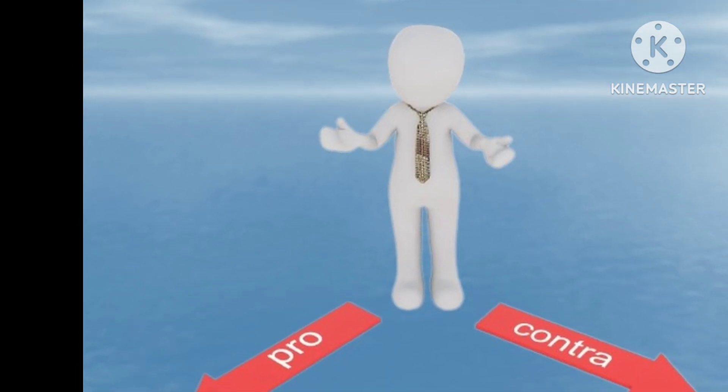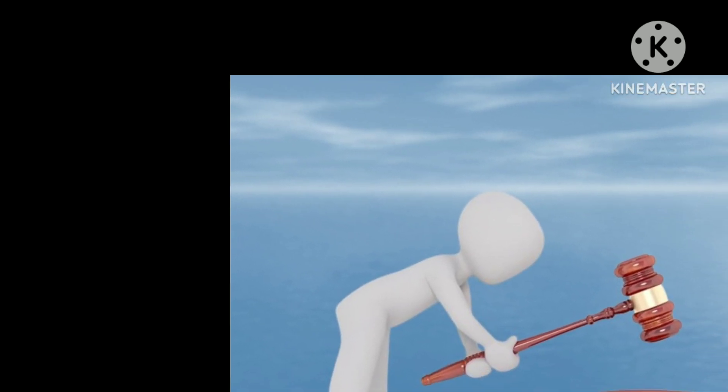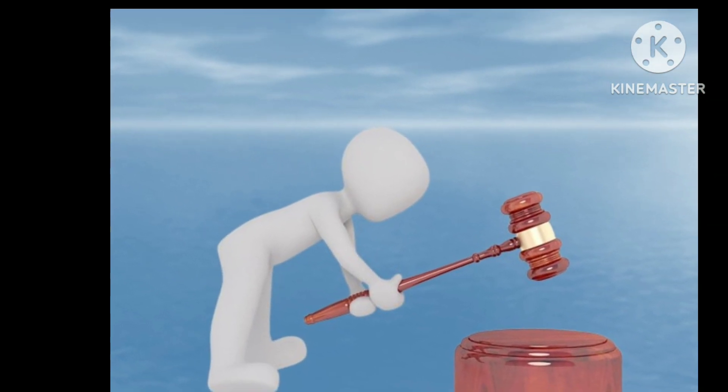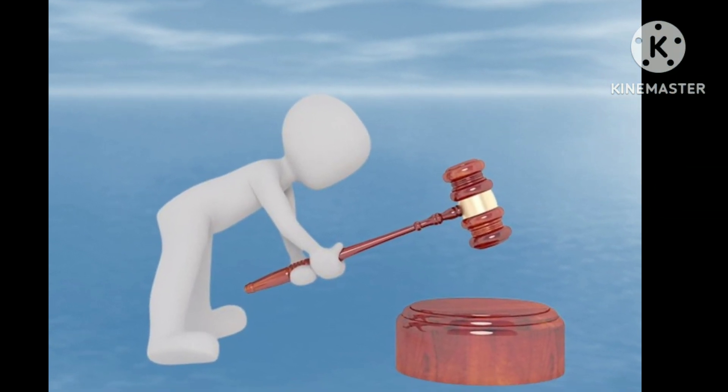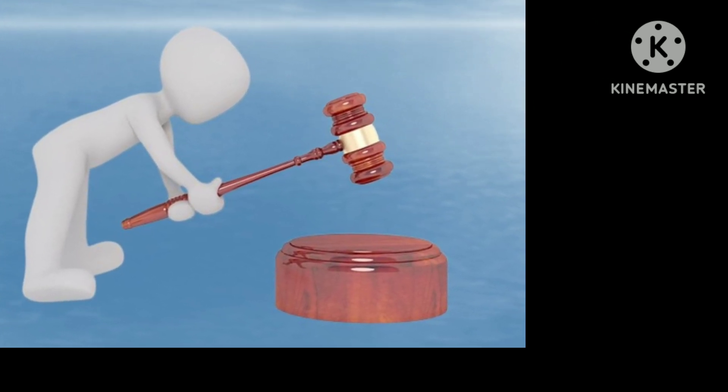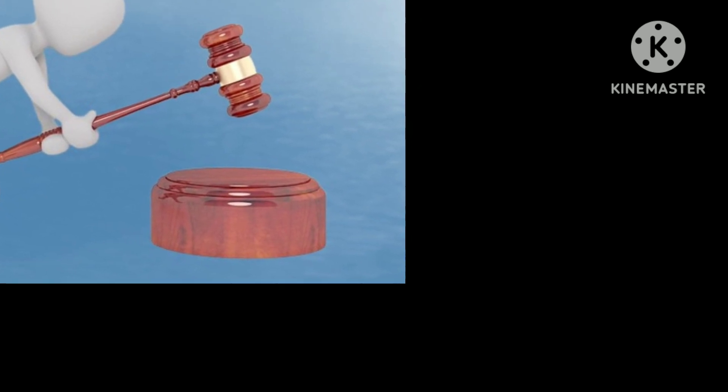But here comes the striking difference. After the sin of the calf, Moshe returns to Mount Sinai, and within 40 days, the Israelites will receive the second Luchot. After the sin of the spies, the Israelites will try to enter Eretz Canaan, but Moshe will remain in the camp, and it will not succeed. The penalty for the sin of the calf is the death of about 3,000 people. The punishment for the spies' sin is 40 years in the desert, until all your carcasses fall in this desert.